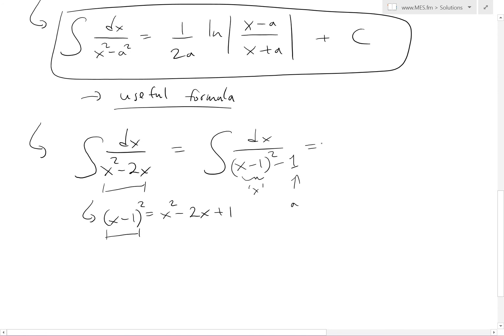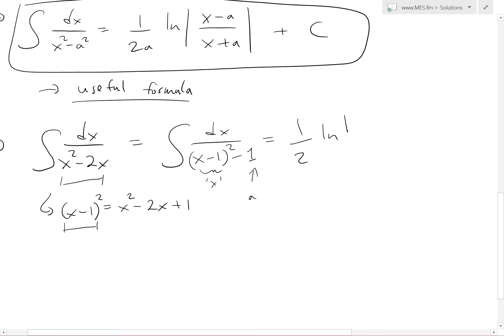So this equals 1 over 2 times a, which is 1, then ln of x minus 1 minus a, which is 1, divided by x minus 1, which is our new x, plus 1. This is our new x right here, and then we just add 1.